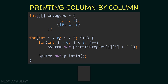So what's happening exactly? We start with i equal to zero. We print integers[0][0], then increment j and print integers[1][0] — so we printed the first column: three and ten. When j is incremented the condition becomes false, we print a new line and increment i. Now i equals one: we print integers[0][1] then integers[1][1], so we printed the second column: five and two. After another new line and i increment, we print integers[0][2] then integers[1][2] — the last column: seven and nine.